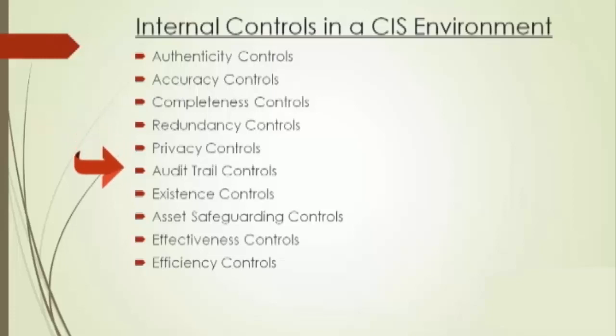Next comes audit trail controls. Audit trail controls ensure the traceability of all events which have occurred in a system. They help you trace out all events that have actually occurred. This record is needed to answer all queries, fulfill statutory requirements, minimize irregularities, and detect consequences of errors. The accounting audit trail shows the source and nature of data and processes that update the database, while the operations audit trail maintains the record of attempted and actual resource consumption within a system.